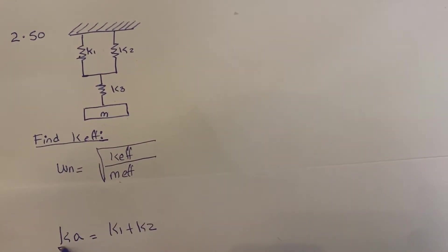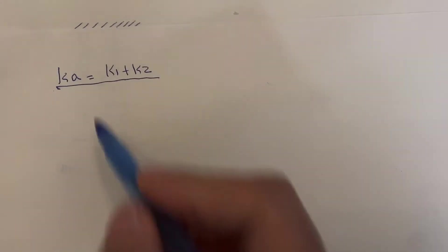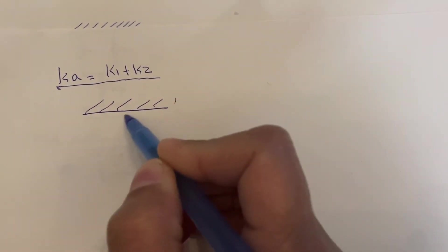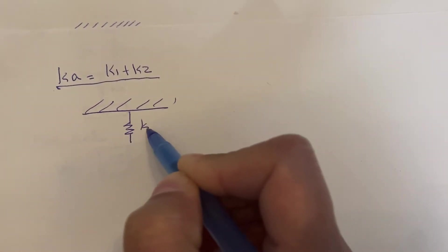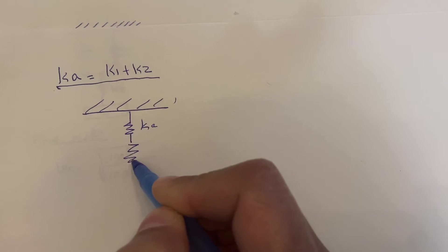So, ka is going to be equal to k1 plus k2. Now, we can simplify the system by drawing the equivalent stiffness ka attached to k3.